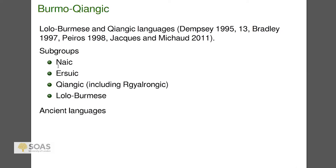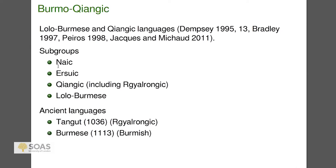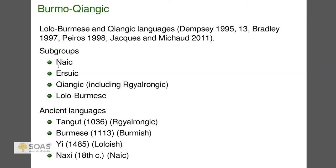The Burmo-Changik hypothesis has been around for a while: the earliest citation I've found is Dempsey 1995, but the Jacques and Michaud 2011 paper really started wider acceptance. Even now many Sino-Tibetanists don't believe in Burmo-Changik, but I do. Ancient languages in this family include: Tangut from 1036 (Gyalrongic), Burmese first attested in 1113 (Burmish), Yi first attested in 1485 (Loloish), and Nashi from the 18th century (Naish) — despite claims in China that Nashi manuscripts are very old, none are clearly pre-18th century. Basically each branch has its own old language.